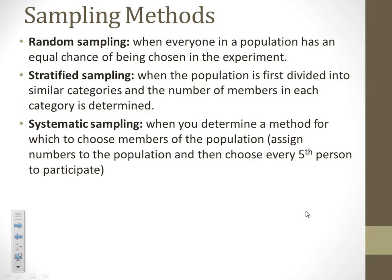There's also systematic sampling. One example is to assign numbers to everybody and then choose every fifth person — so instead of drawing randomly, you make a list, choose the second person, and then every fifth person after that. That's systematic: there's a system to it.